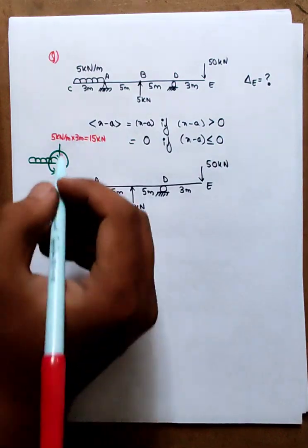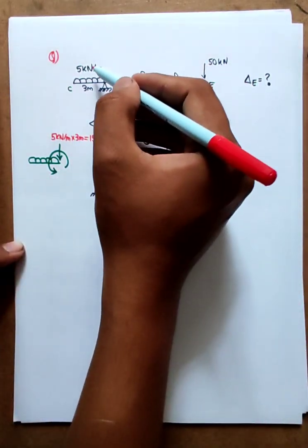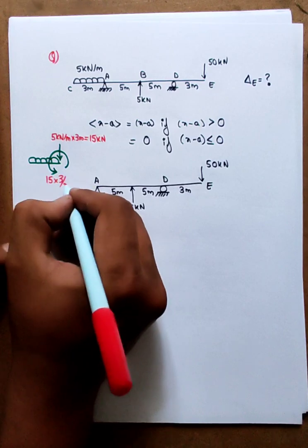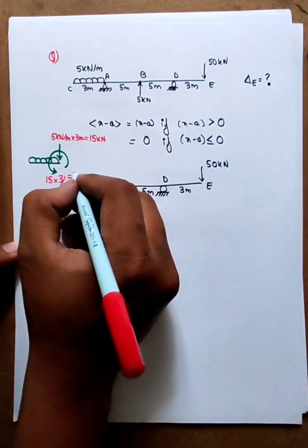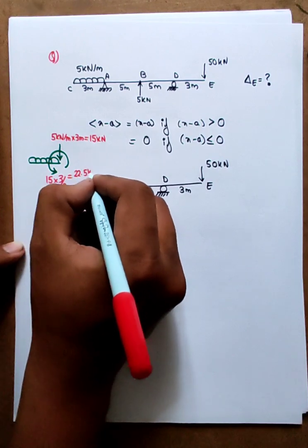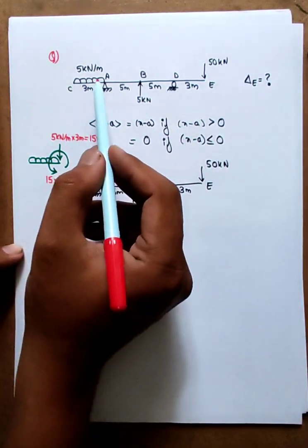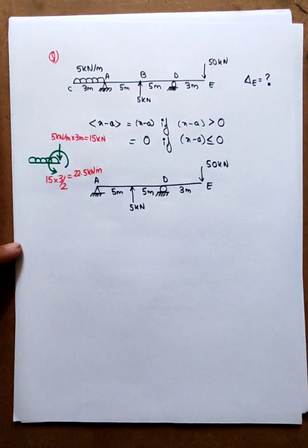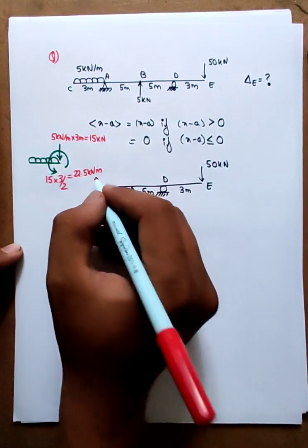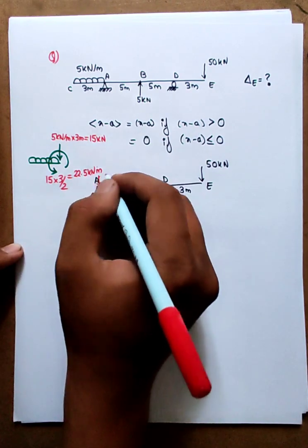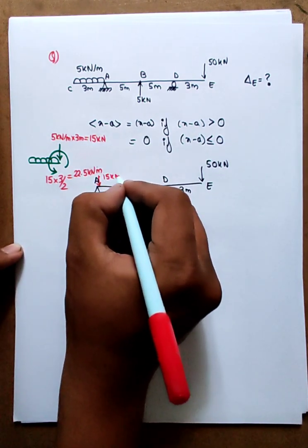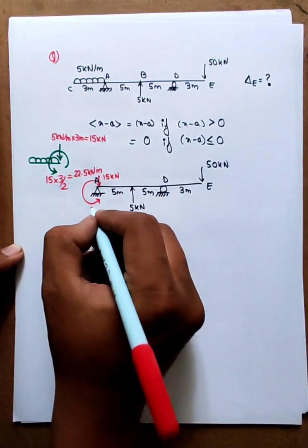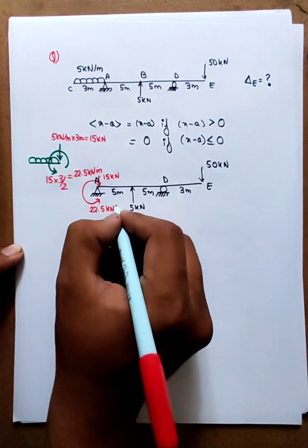The equivalent of the anti-clockwise moment is 5. The equivalent of the point load is 15 into 3 by 2, which is 22.5 kN·m. The equivalent of the point load gives us the equivalent moment.